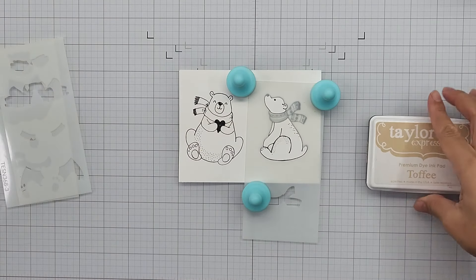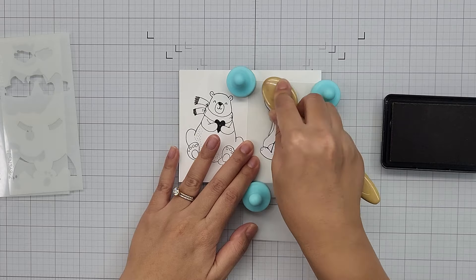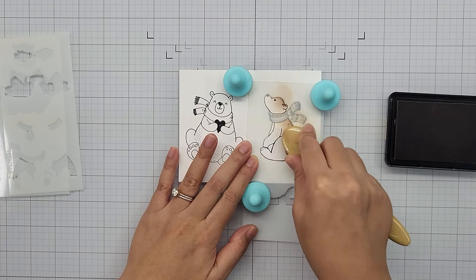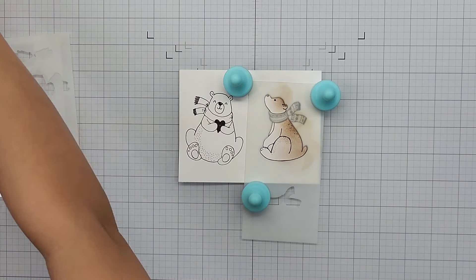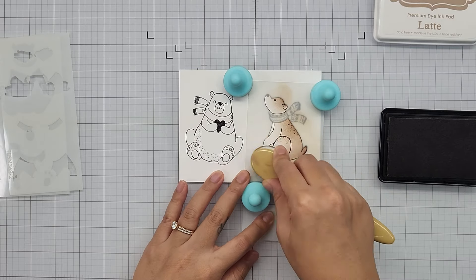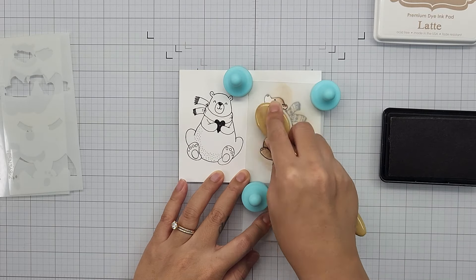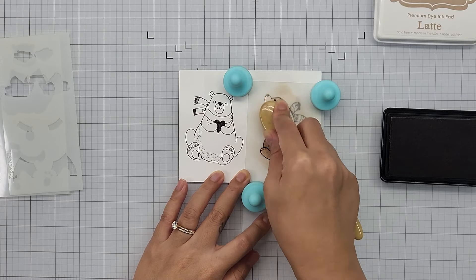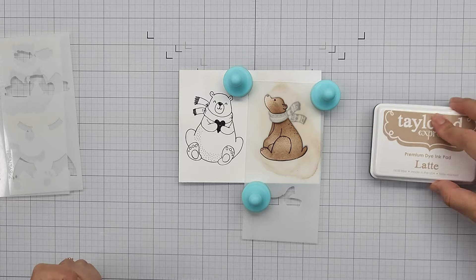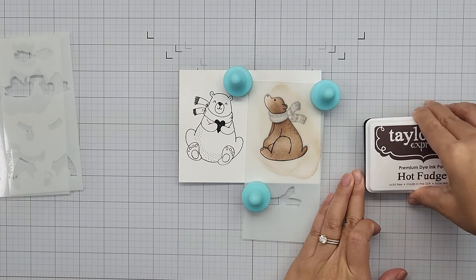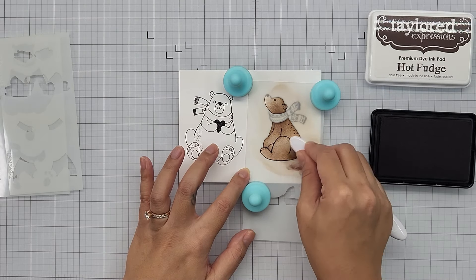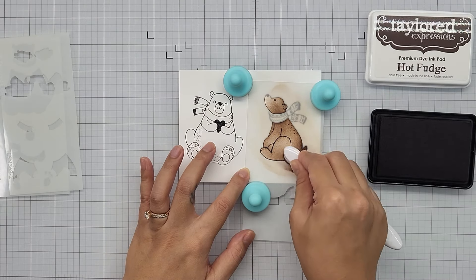I then use my strong magnets to hold the stencil in place. I started off using my Toffee colored ink pad with my blending brush. I am ink blending around the inside of the openings of the stencil, keeping a very light hand with this color. Then going in with Latte ink, I am blending that inside the openings of the stencil as well, also keeping a light hand. Going in with Hot Fudge, I am blending this color with a heavier hand around the edges of the opening of the stencil. I am using the darker shade to create a sense of shadow on the bear.